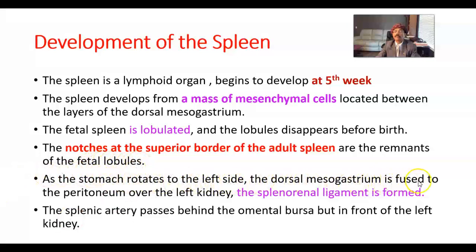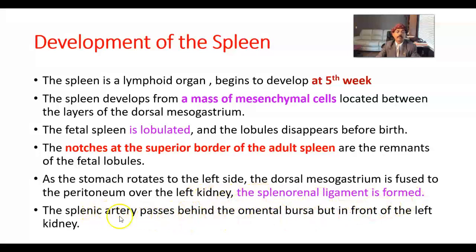As the stomach rotates to the left side, the dorsal mesogastrium is fused to the peritoneum over the left kidney, and the splenorenal ligament is formed. We get the splenic artery in this ligament.